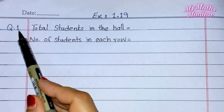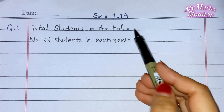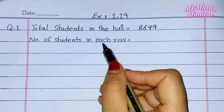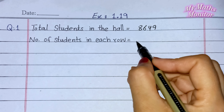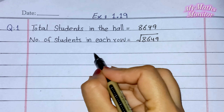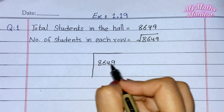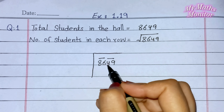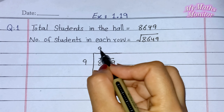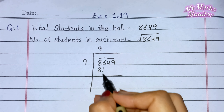Question number 1 solution: سب سے پہلے given information لکھیں گے۔ Total students in the hall — student کی تعداد given ہے 8,649۔ Number of students in each row معلوم کرنا ہے۔ یہاں پہ ہم 8,649 کا square root find out کریں گے، division method سے۔ 8,649 کو right side سے pair میں convert کریں گے: 49 first pair ہے، 86 second pair ہے۔ 86 کو سب سے پہلے solve کریں گے — 9×9=81، minus کریں گے، 86-81=5۔